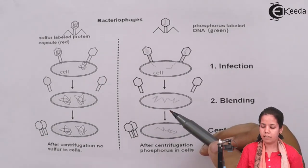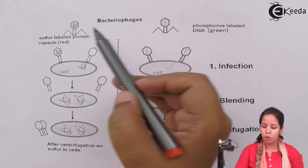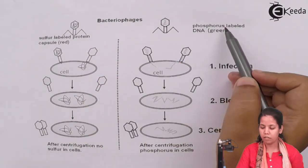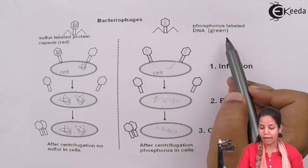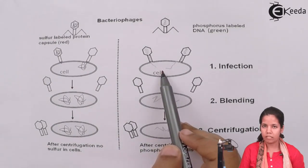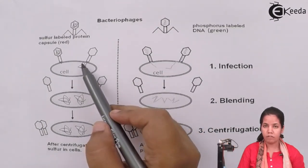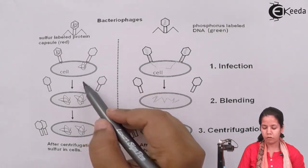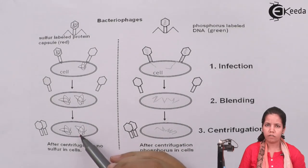Lederberg and Zinder took two different T2 phages: one was sulfur-labelled with a protein coat and had red capsules, while the other was phosphorous-labelled and had green capsules. They took two S. typhi bacteria and injected the phages in a distinctive manner. The red, sulfur-labelled phage was injected into one bacterium. According to bacteriophage theory, the phage DNA would integrate into the bacterial genome, but after centrifugation, no sulfur was found in the cell.